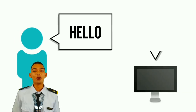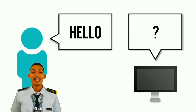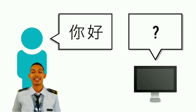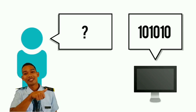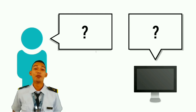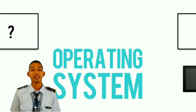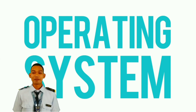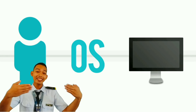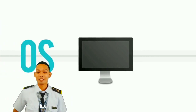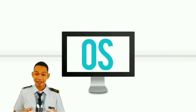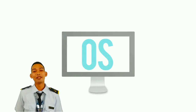Did you know that you and your computer speak different languages? It doesn't speak Spanish, Swedish, or Chinese — it speaks 1s and 0s. We cannot communicate directly with a computer. That's where the operating system comes in. The operating system is the program that lets you interact with your computer. Together, the operating system and computer hardware form a complete system that determines what your computer can do.